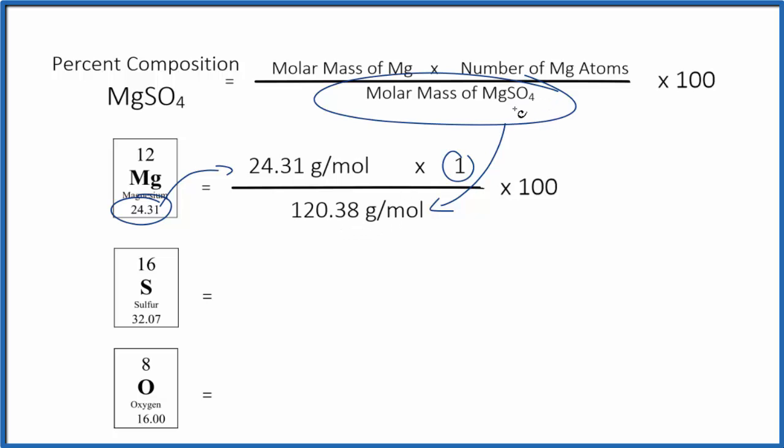If you need help calculating the molar mass for MgSO4, there's a link at the end of this video. So we multiply the top and divide by the bottom. Since we've got grams per mole on top and bottom, those cancel out. We multiply all of that by 100. We're left with 20.11%.